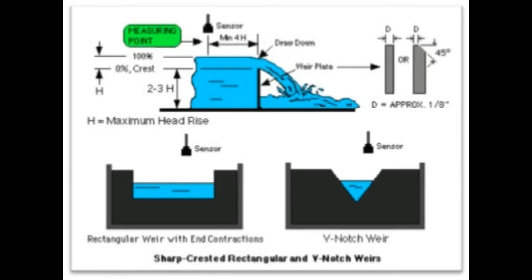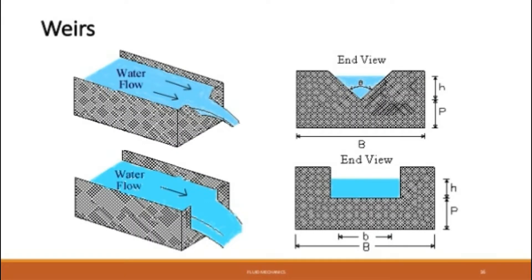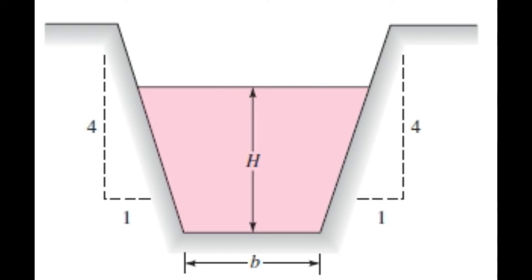In this video we are going to discuss the flow measurement in channels. Notches and weirs are regular obstructions placed across open streams over which the flow takes place. A weir or a notch may be regarded as a special form of large orifice with the free water surface below its upper edge. Examples of three well-known types are the rectangular notch, triangular notch or V-notch, and the Cipolletti trapezoidal weir or notch.